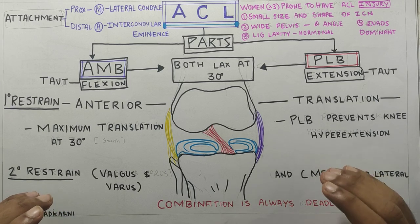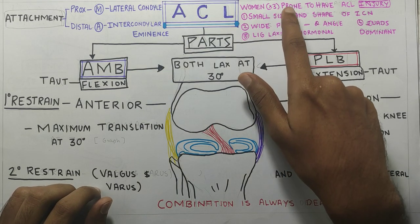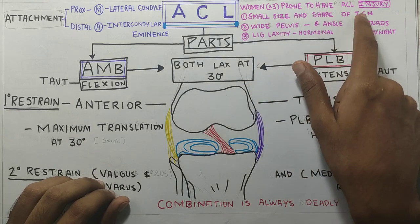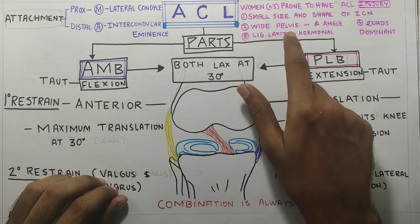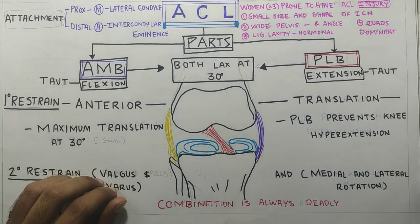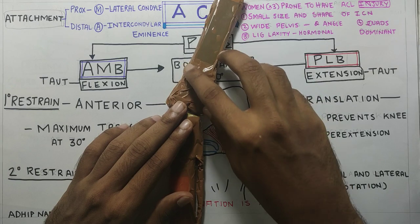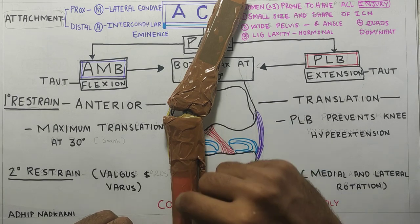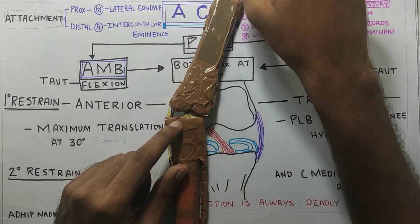ACL tries to stabilize the knee joint in every direction and hence we call it the nice guy. But as we all know, nice guys always finish last — and hence ACL injury is very commonly seen in our clinics. Women are three times more prone to ACL injury than men. It is because of the small size and shape of the intercondylar notch at which the ACL attaches. Also another reason is a wider pelvis that increases the Q angle — women have a wider pelvis and hence the femur is more medially angled, which increases the Q angle.